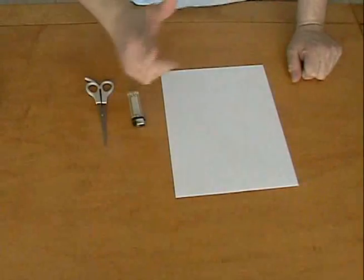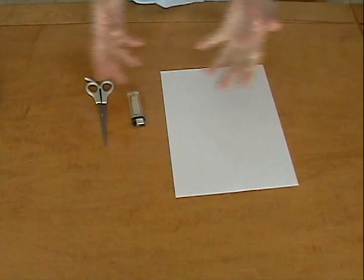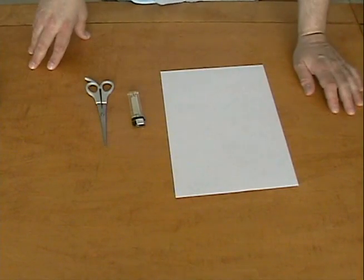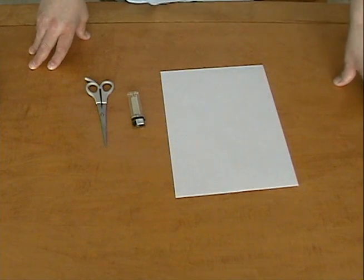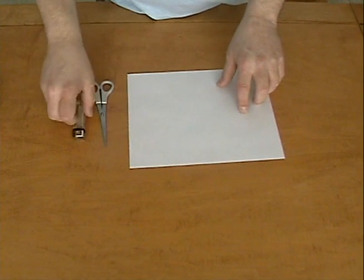Hello and welcome to Do Try This at Home. The show that takes ordinary materials that you can find lying around the house and turns them into something extraordinary. Today we're going to make a paper jet engine.